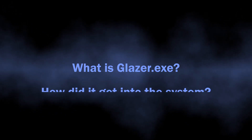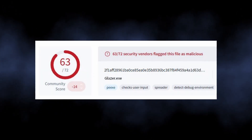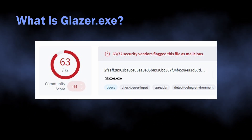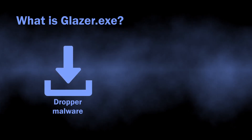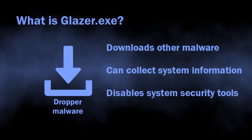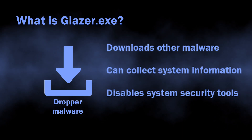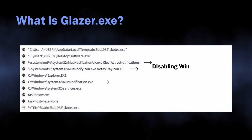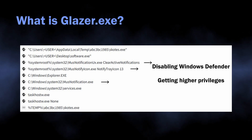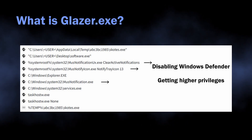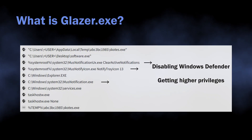Glazer.exe is a process of Amity Dropper, a malicious program that aims at delivering other threats to your computer. Imagine it as something that creates a direct pathway for malware, so threats will appear and start running without any visible signs or user interaction. This dropper is also known for disabling security mechanisms and gaining the highest privileges.